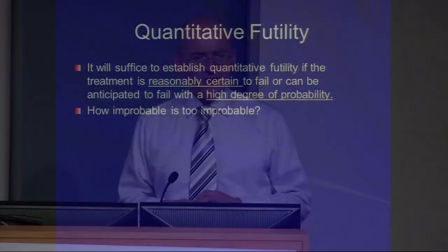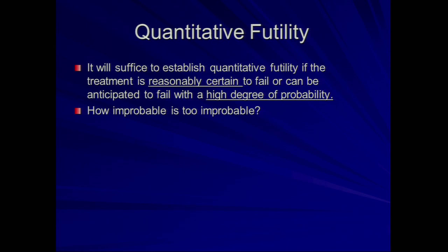Absolute certainty is not, and should never be, the basis upon which medical decisions are made. Medicine is not a science of the certain. Medicine is the art of the probable. It is sufficient to establish quantitative futility that the treatment be — as I would say as a lawyer — reasonably certain to fail, which is to say that it is likely to fail with a high degree of probability.